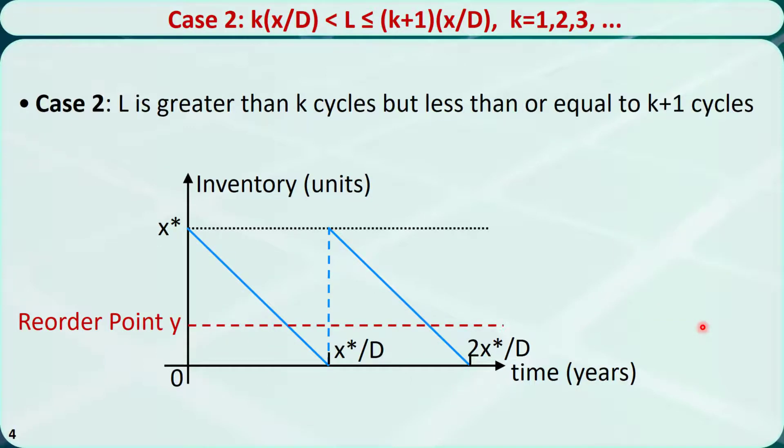Case 2: L is greater than k cycles but less than or equal to k plus 1 cycles, where k equals 1, 2, 3, and so on. For example, if the lead time is longer than 1 cycle but shorter than 2 cycles, k is equal to 1. We must order at this point so that after the lead time, the products will arrive exactly when the inventory is decreased to 0.